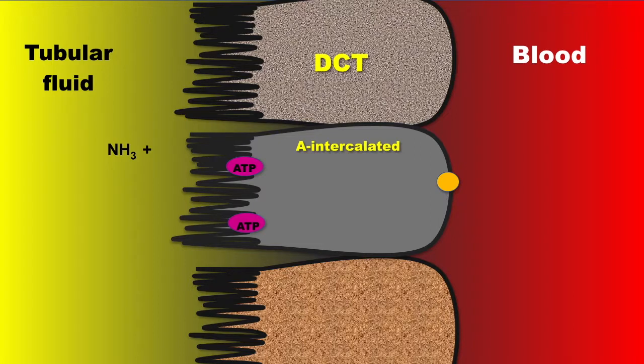In the collecting tubules, hydrogen is secreted where it combines with ammonia to form insoluble ammonium, which will be secreted in the form of soluble ammonium chloride. For each ammonium excreted, a new bicarbonate is generated.